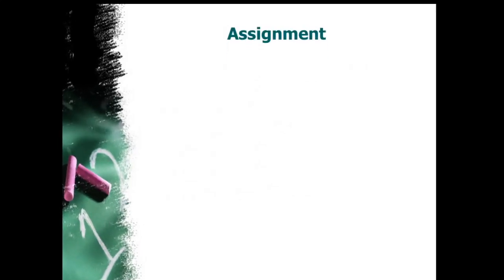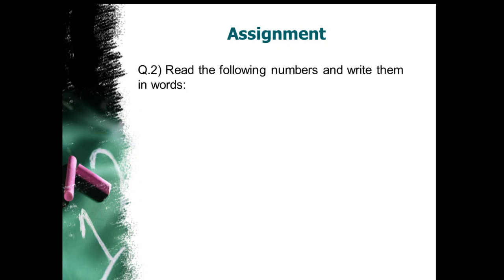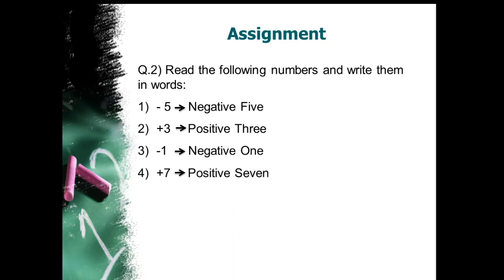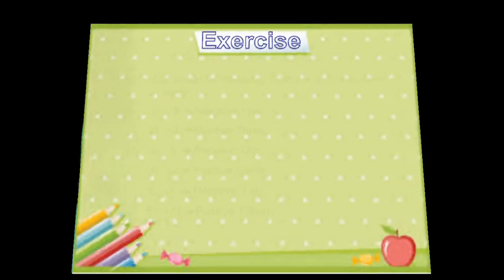Coming to the next assignment: read the following numbers and write them in words. Minus 5 is written as negative 5. Plus 3, that is positive 3. Minus 1 is written as negative 1. Plus 7 is written as positive 7. Minus 2 is written as negative 2. And plus 15 is written as positive 15.